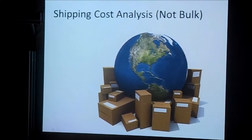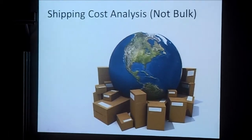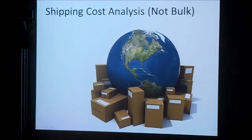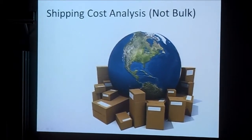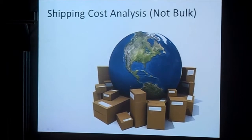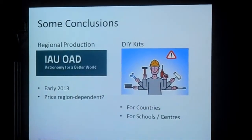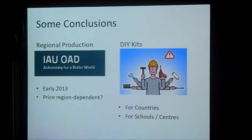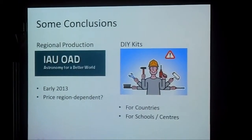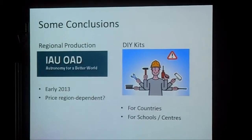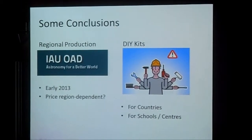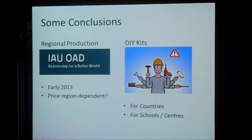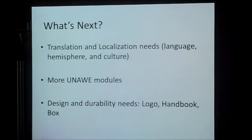I also looked at whether it is better to produce in one place and ship globally after localization, or better to have different countries making it on their own. One conclusion is that regional production makes sense given material and shipping costs. Another key idea is do-it-yourself kits — you can download the whole package, get a sample, and redraft it for your country.